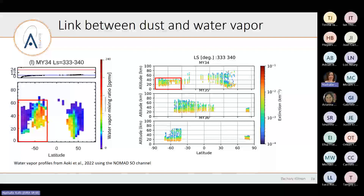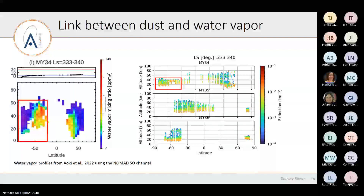That's a good point — zero opacity is a result in itself. Above, you always have data because you start at the very top of the atmosphere and go down. At the bottom, the atmosphere may be too opaque and you cannot see through it, but above that means you have measurements showing nothing. Adding a color indicating zero extinction would be helpful.